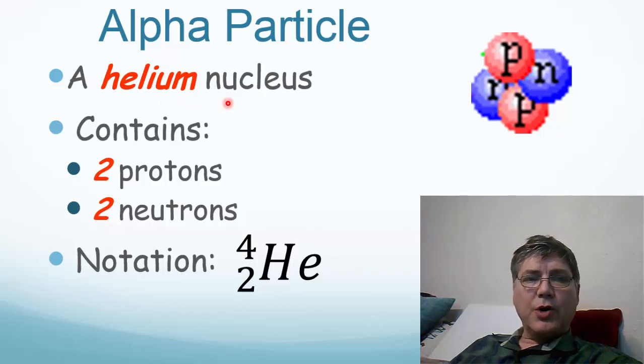In fact, all helium that occurs on Earth comes from alpha particles, from radioactive decay of larger elements. There's no naturally occurring helium on Earth.